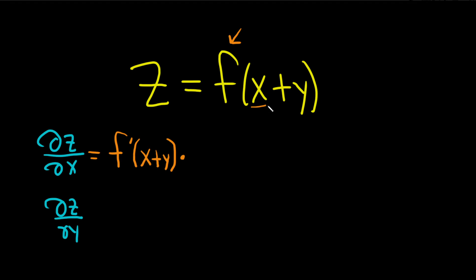So now we're taking the derivative of x plus y with respect to x. Well, the derivative of x is 1, plus, and then the derivative of y is 0. Okay, so it's times 1 plus 0. And then, so this just ends up being f prime of x plus y.